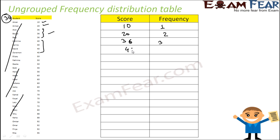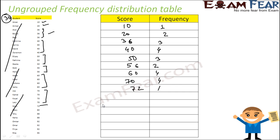Continuing the example: 40 appears 4 times, frequency is 4. Score 50 is again 3 times, frequency is 3. Score 56 is 2 times, frequency is 2. Score 60 is 4 times, frequency is 4. Score 70 is 4 times, frequency is 4. Score 72 is 1, score 80 is 1, and score 88 appears 2 times.